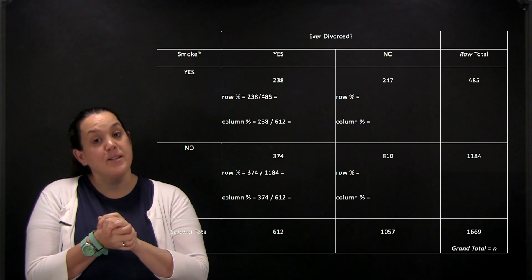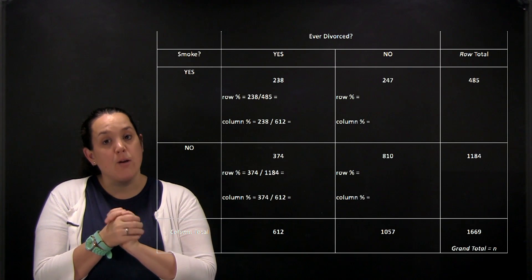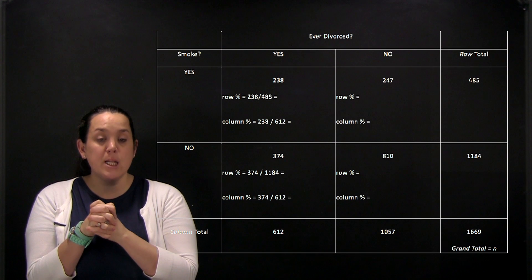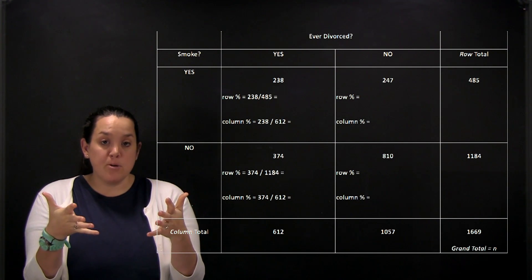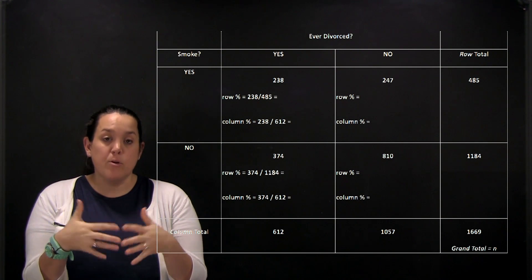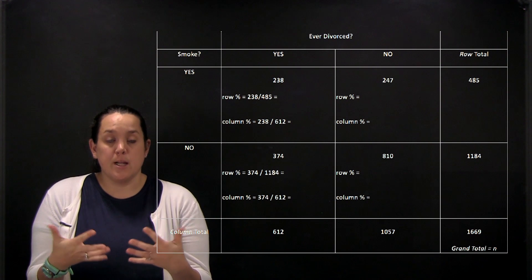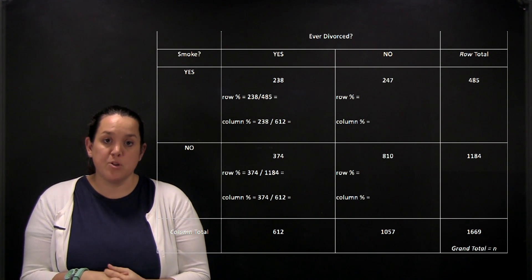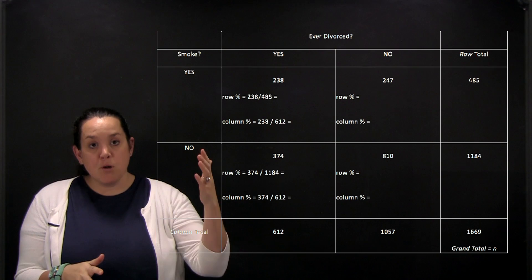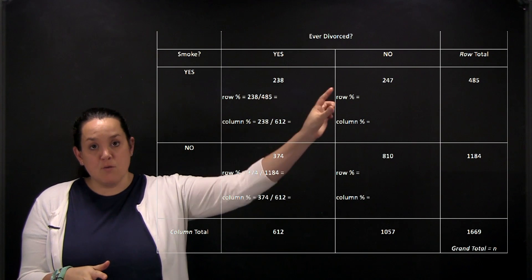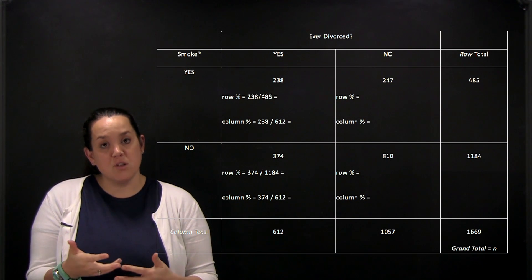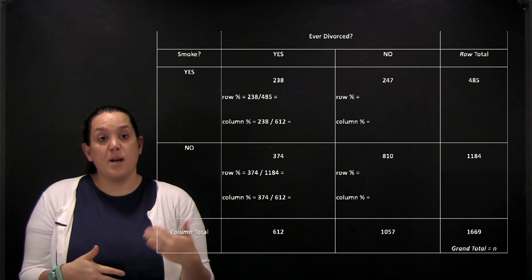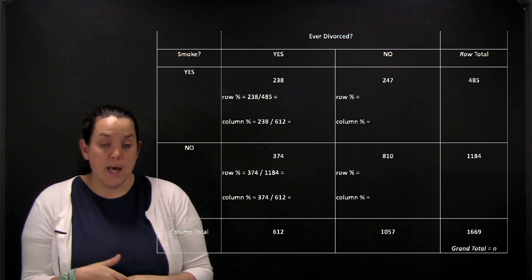Today we're looking at the analysis of two categorical variables, starting with how it's displayed. When you talk about two categorical variables, it's bivariate data, meaning that you have two measurements collected on one person. Here we have smoking status and divorce status, so each person would respond yes or no to smoking and then yes or no to divorce status.